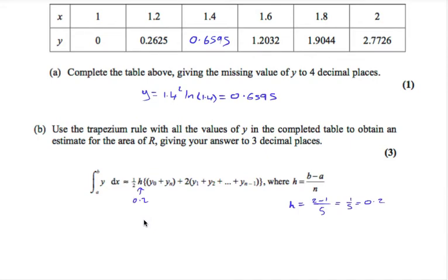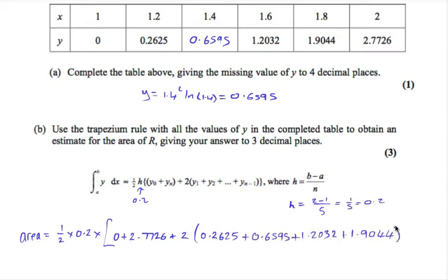Another way to find h without doing this is looking what the x values are increasing by. They're all increasing by 0.2. y 0 is our first y value. y n is your last y value. y 1 to y n minus 1 is the sum of all the other y values. So using the trapezium rule, an estimate for the area of R will be a half times 0.2 times 0 plus 2.7726 plus 2 times the remaining y values added together. Putting this all on your calculator, we get 1.083 to three decimal places.